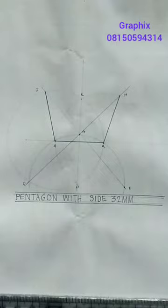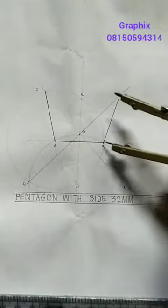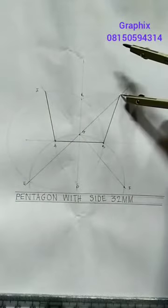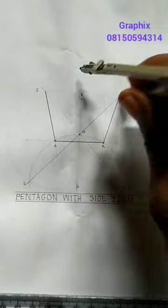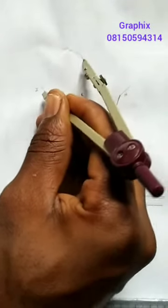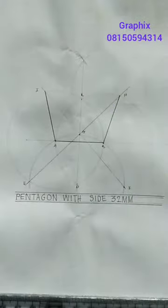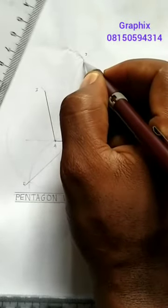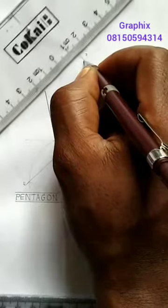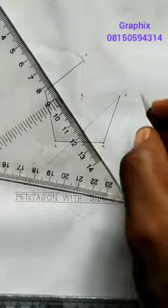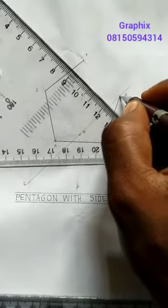Then with that same radius of AB here that you're using all that long, you place it at H, you strike an arc, and you place that I, you also strike an arc. So where they meet is our point J and you're going to connect it to I.